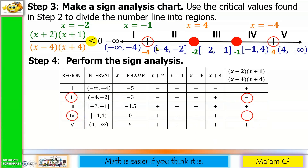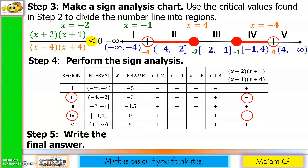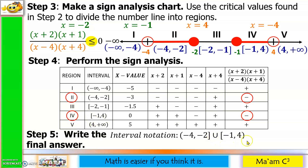Now let us shade our number line for region 2 and region 4. Step 5: Write the final answer. For interval notation, all we have to do is copy our intervals. From region 2: negative 4 to negative 2, union, from region 4: negative 1 to positive 4.